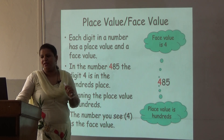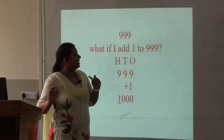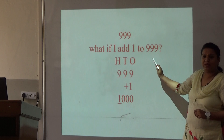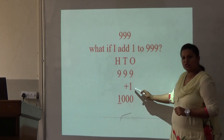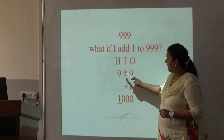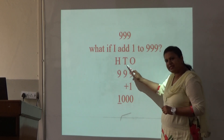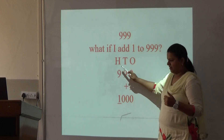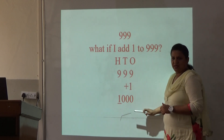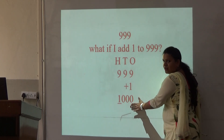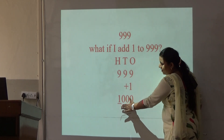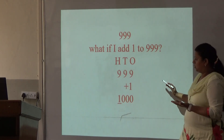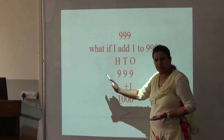You might have learnt counting till 999. What will happen if we add 1 to 999? 9 plus 1 is 10, 1 will be carried over. Again 9 plus 1, we will get 10 and 1 will be carried over. 9 plus 1 is 10. Now what digit have we got? Here this 0 is at 1's place, 10's place, and 100's place. Now what is this 1 and what place is it at? So we are going from 100's to 1000's.